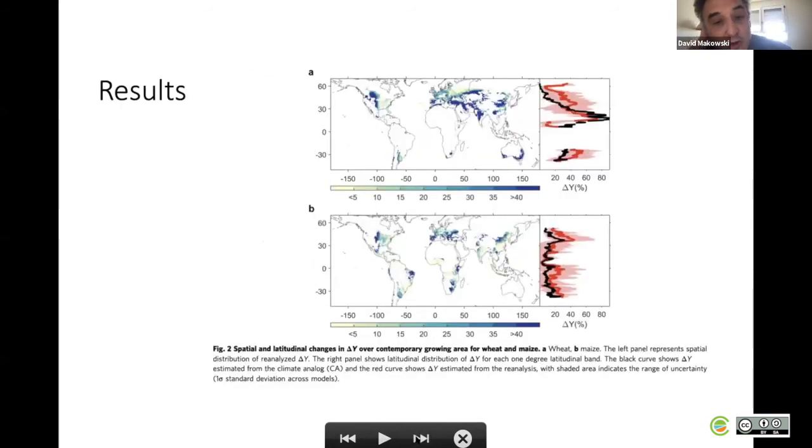Now the results. Here you have the maps of yield gaps coming from the Bayesian model averaging outputs for wheat at the top and maize at the bottom. You see a huge spatial variability of these yield gaps. You have relatively strong yield gaps in dry areas, of course, like Spain, Greece, South Africa, and a few other parts in Asia and South America.